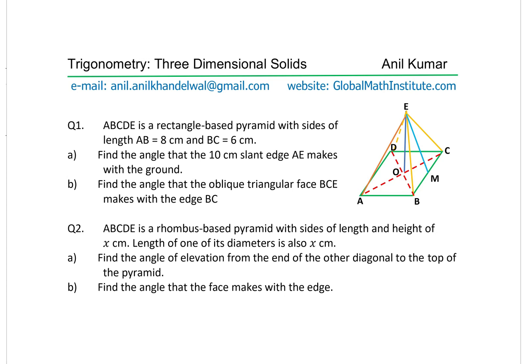The first question: ABCDE is a rectangular-based pyramid with sides of length AB equals 8 centimeters and BC equals 6 centimeters. Part A: find the angle that the 10-centimeter slant edge AE makes with the ground. Part B: find the angle that the oblique triangular face BCE makes with the edge BC.